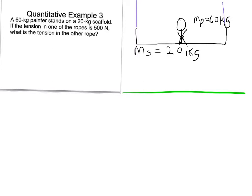So, I want to know what the tension in one of the ropes is. The problem says the tension in one rope, and we'll call it FT1, is 500 N. I'm now trying to find out what the tension in the other rope is. So FT2 equals question mark.